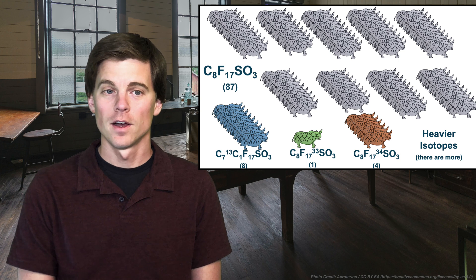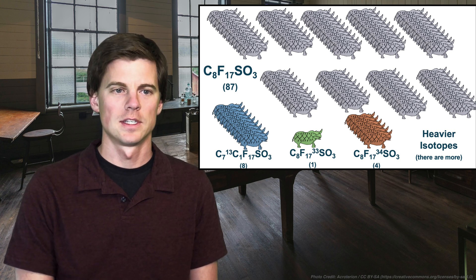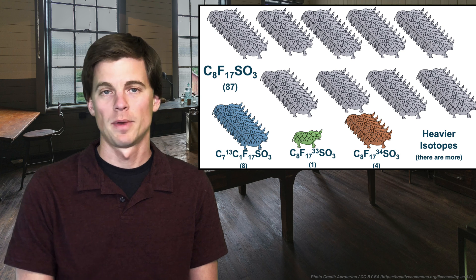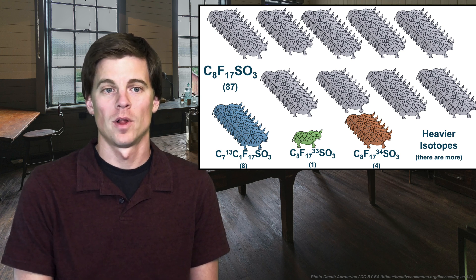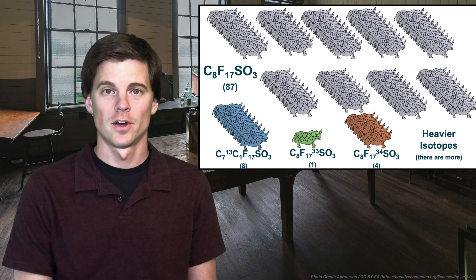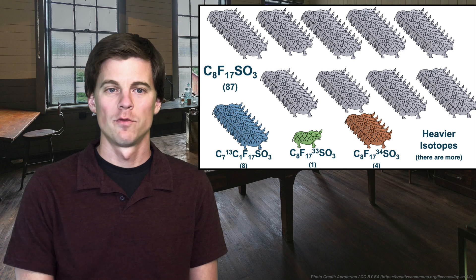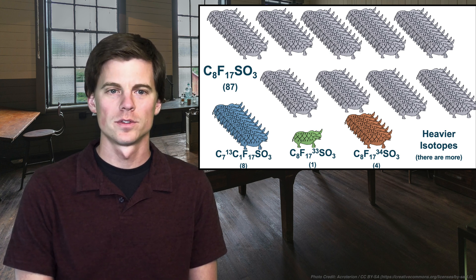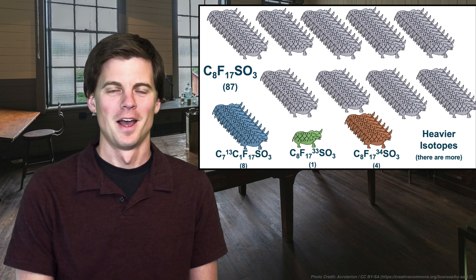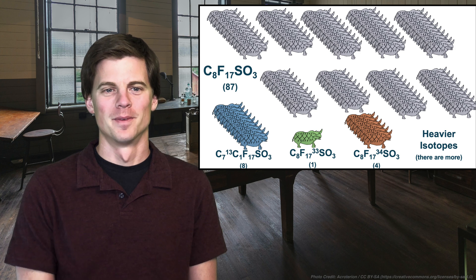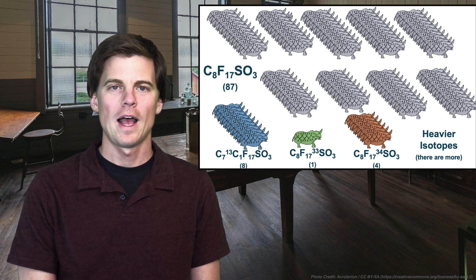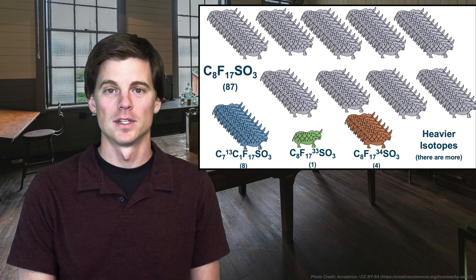87 would exist as what we call the mono isotopic form. So this is the C8F17SO3. That is what we would think of, but what you got to consider is eight of those hundred would exist as this, we would call this the C13 isotope. So one of those eight carbons is replaced with a heavy carbon just by luck. That happens on eight of these hundred molecules. One of those hundred molecules would have the S33 replacing our S32. And then finally, we would have four S34s replaced or four molecules. And it looks like I've got the number of rhinos wrong there, but just pretend there's four. But if four of them were the S34 version of it, that kind of shows you how these things exist in nature and what these natural abundances of isotopes would be.